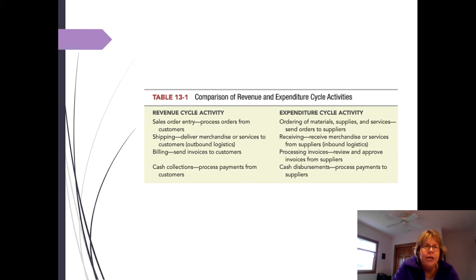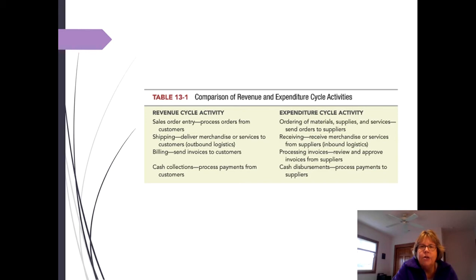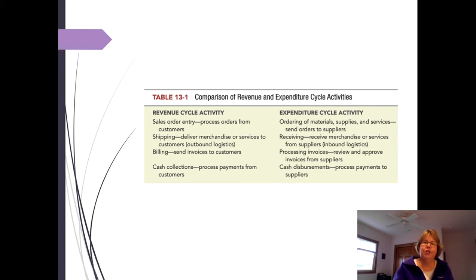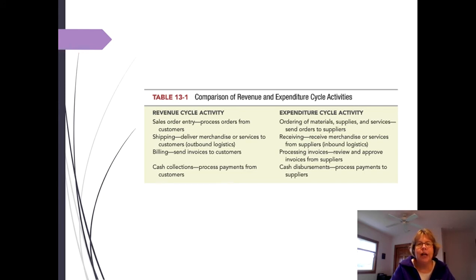Table 9-1 in the shorter textbook, or table 13-1 in the full textbook, lines up the revenue and expenditure cycles side by side. In the revenue cycle we have sales order entry; on the expenditure side we have ordering of goods. In the revenue cycle we have shipping; on the expenditure side we have receiving. Then billing and processing invoices, cash collections versus cash disbursements. You can see the two lining up — if somebody is selling to us, they're collecting cash while we're giving them cash, so it's just the opposite of each other.